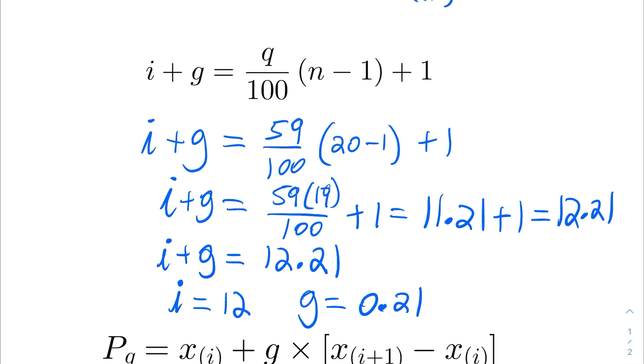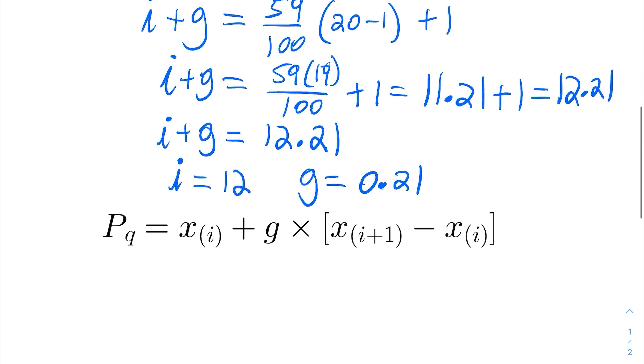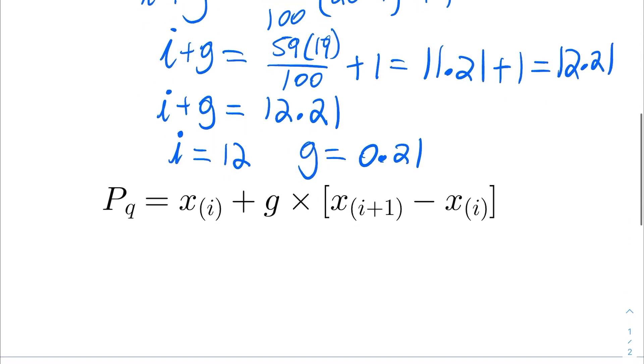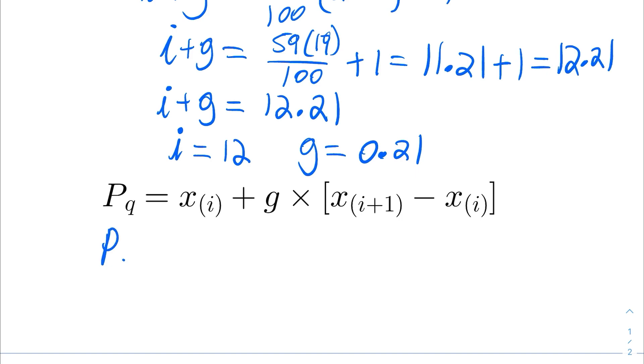Now, with the values of i and g, I can go ahead and find the value that I need for the 59th percentile. I'm going to use this formula to find the 59th percentile. This is going to say that P59, or the 59th percentile, because q is the value of 59, is equal to the order statistic X12, which is the 12th value in the ordered list, in the list ordered in ascending order.